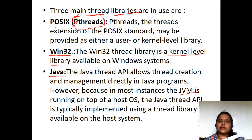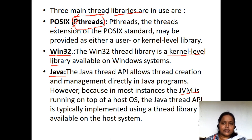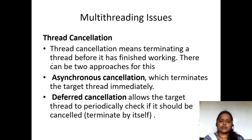To summarize: Pthreads are for both user-level and kernel-level libraries. WIN32 threads are specifically for kernel-level libraries only. Java threads allow creation and management of threads via an API. Next, we will look at multi-threading issues — what are the different problems we are going to face with multi-threading?